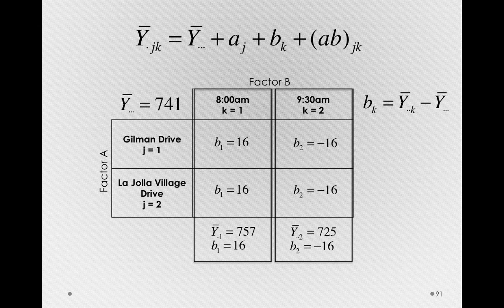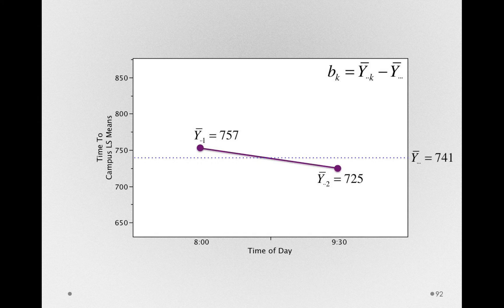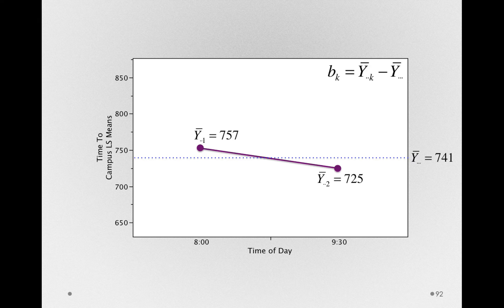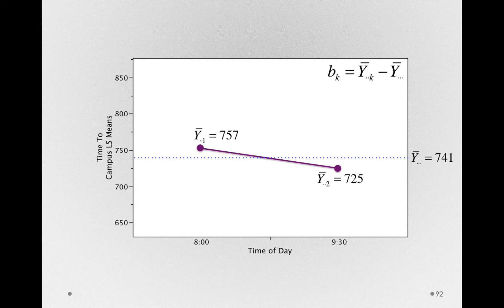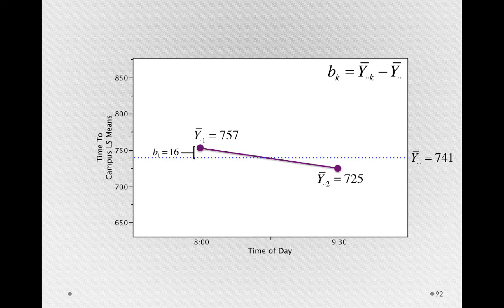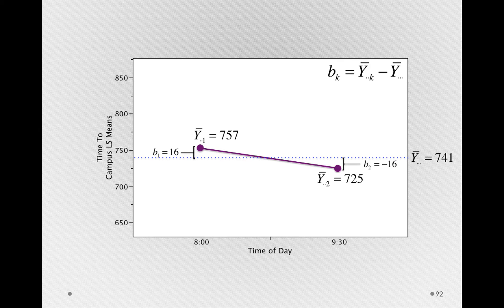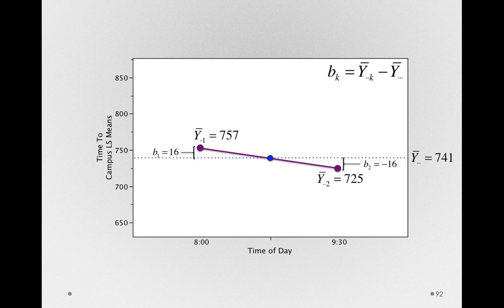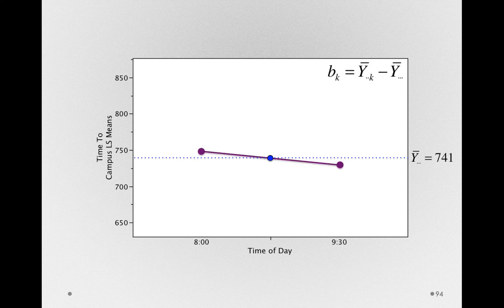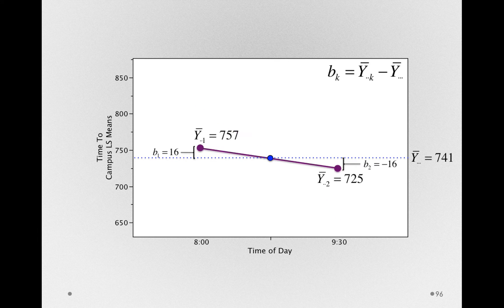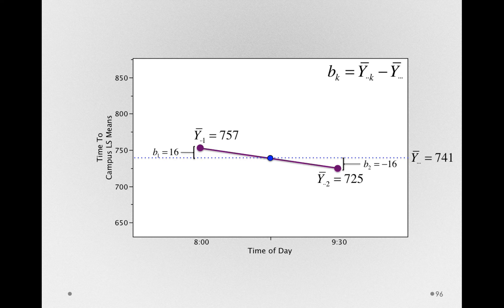Let's explore this graphically. Let me add the grand mean in, Y bar dot dot dot is 741. Notice the degree to which Y bar dot dot 1, the mean at 8 a.m., is above that line, 16. The mean at 9:30 has to be below that line. There is a pivot point in the structure. To the degree that one of these means is above and one is below, the other mean will be simply the complement. It'll extend in the other direction exactly as far.